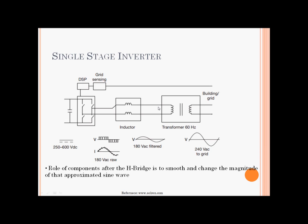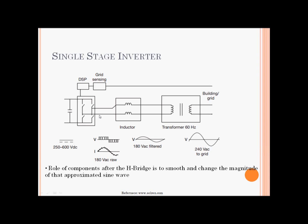Here is a single-stage inverter which produces a pure sine wave — you can see it is much more complex. It has grid sensing, a DSP control algorithm, a DC source, and a capacitor to remove ripples. Then it has an H-bridge connected to produce a modified square wave. What the H-bridge produces is then passed through an inductor to remove the ripples, yielding a much better sine wave with fewer ripples. It then goes through a transformer to be turned into 240 V AC or 120 V AC for North America.